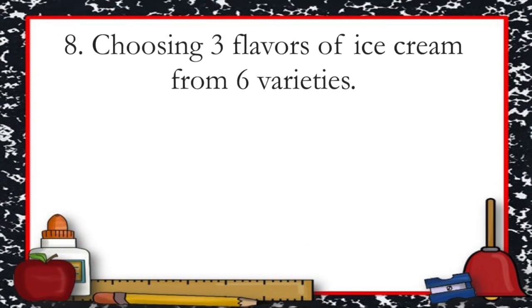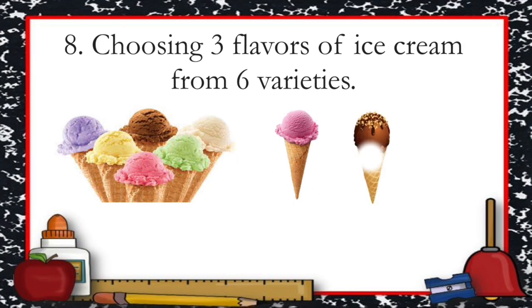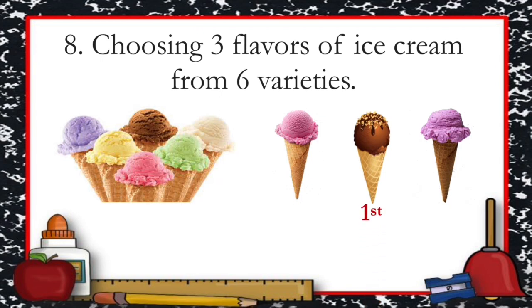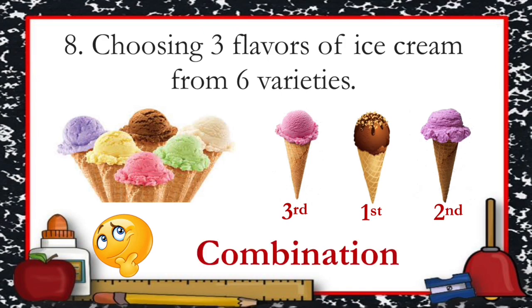How about choosing three flavors of ice cream from six varieties? Let's say you choose strawberry, chocolate, and ube. If you eat first the chocolate, followed by the ube flavor, and last the strawberry, are the flavors you chose different from the order you ate them? No, they are not different, so it illustrates a combination.